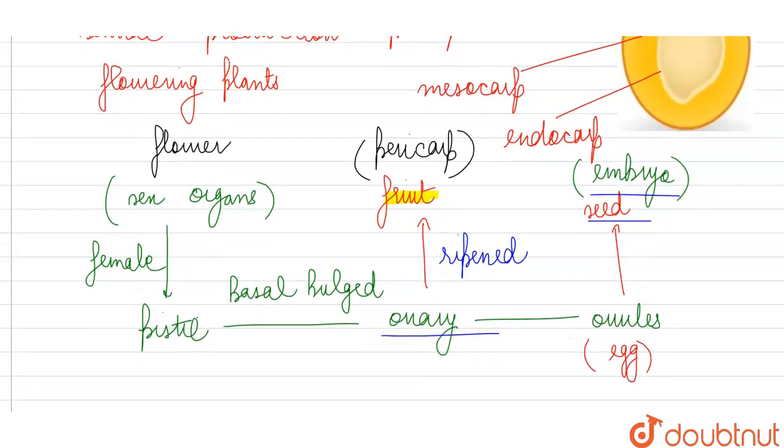And finally, inside, what do we have? We have the seed where the embryo is enclosed inside a covering known as the seed coat.